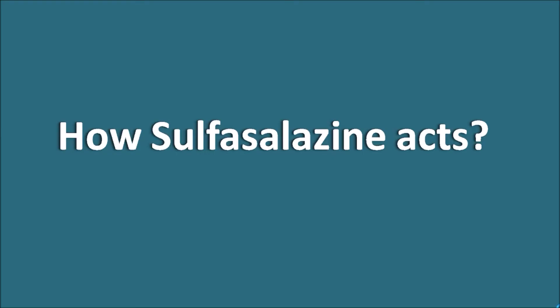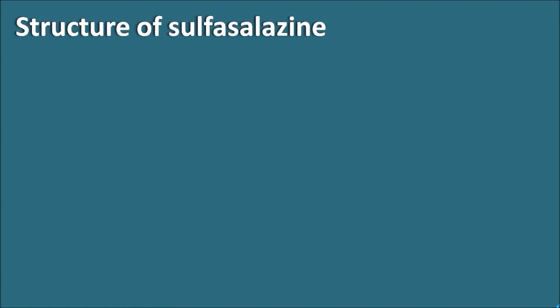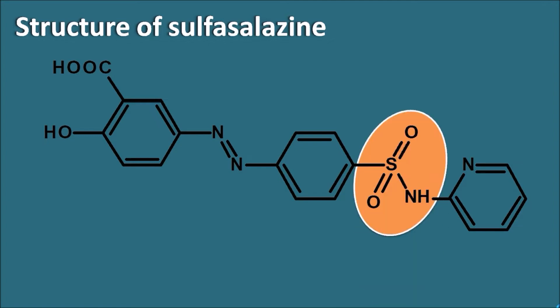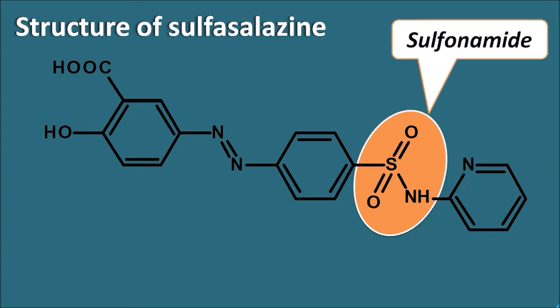How does sulfasalazine act? First, let us see what is the structure of sulfasalazine. Sulfasalazine is a sulfonamide with a large structure. One of the important moieties in the structure is the sulfonamide moiety. Sulfasalazine is pharmacologically classified as a sulfonamide.